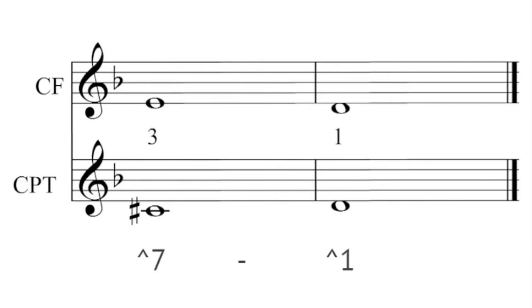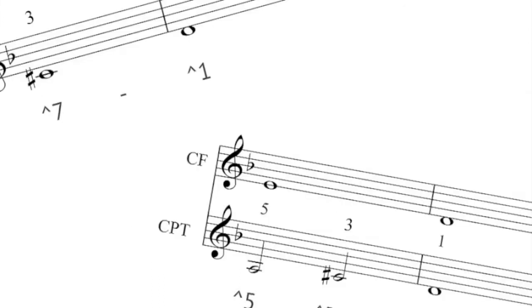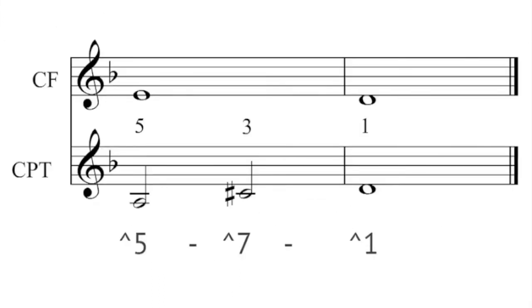So your penultimate bar would be a whole note on scale degree 7 moving to scale degree 1. Alternatively and perhaps a little bit more common is to end with two half notes moving to a whole note.